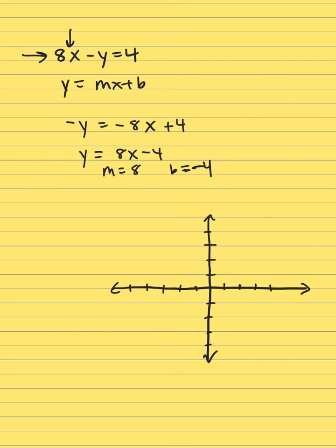Put a point on negative 4 for the y-intercept. The slope is 8 over 1, which is rise over run. So we rise 8 and run 1.